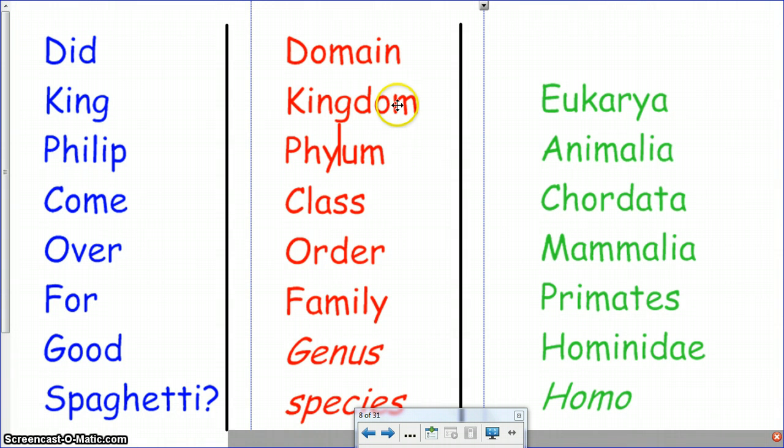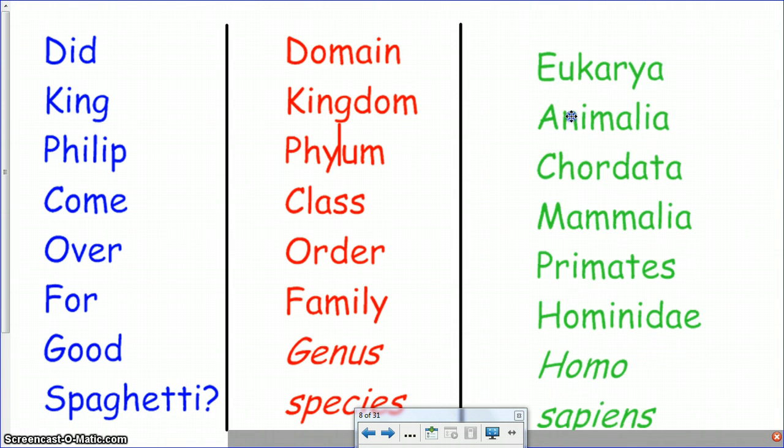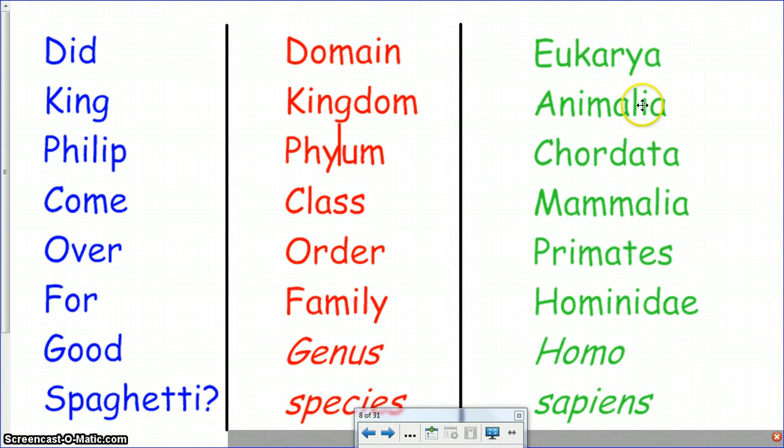And there's multiple kingdoms that make up a domain. So if you were to classify a human being, this is how you would classify them. You would say that they belong to domain eukarya or eukaryota. You would say that they belong to the kingdom animalia, which means that they're animals. They're heterotrophic and they're multicellular. They belong to phylum chordata, which means that they have a notochord when they're developing as a fetus. They belong to class mammalia, which means that they give birth to live young and they have hair on their skin. They belong to order primates, which means they have opposable thumbs, family hominidae, genus, homo, and species is sapiens.